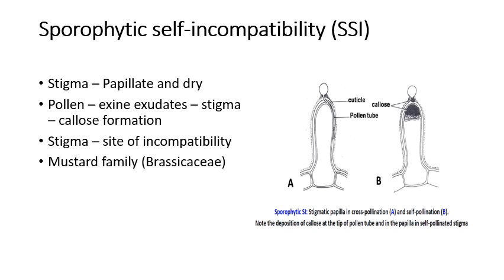In the sporophytic system, the stigma is papillate and dry. After a few minutes of reaching the stigmatic surface, the pollen releases an enzyme which is either a protein or glycoprotein in nature. This enzyme immediately induces callose formation in the incompatible stigma, hindering self-pollination. This sporophytic system is seen majorly in the mustard family, Brassicaceae.